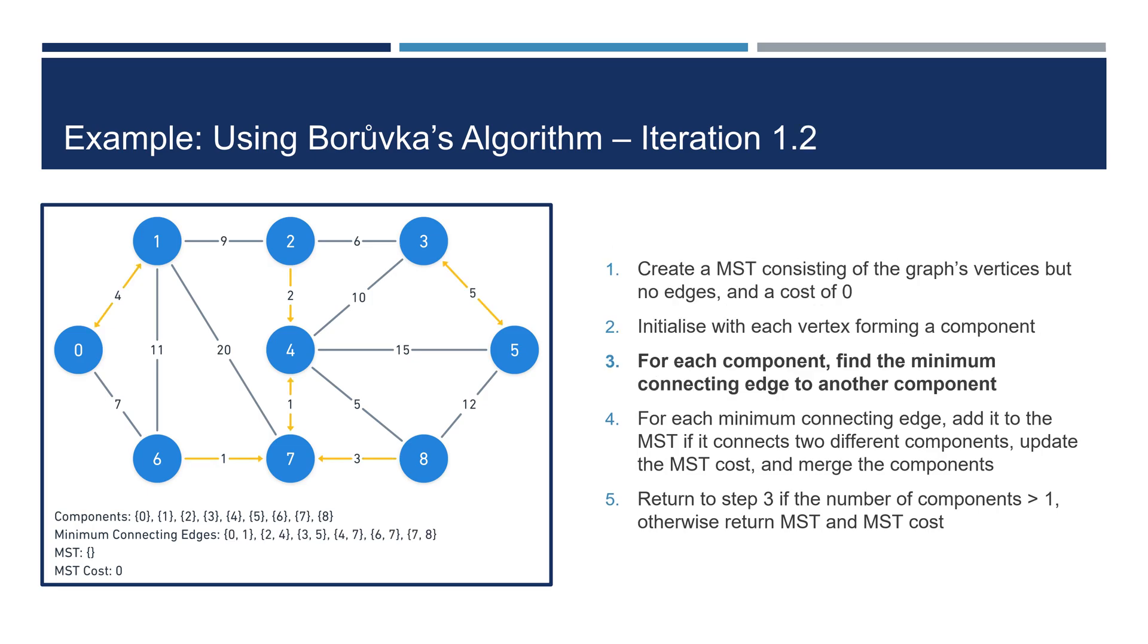For each component, we'll find the minimum weight edge that connects to another component. These are highlighted in yellow with the arrows representing what component selected the edge. For example, the edge of weight 4 was selected by both nodes 0 and 1 as it was the minimum weight edge for both components.